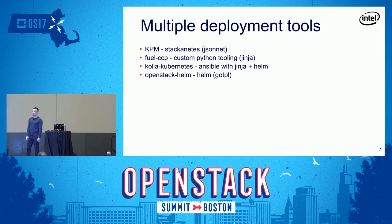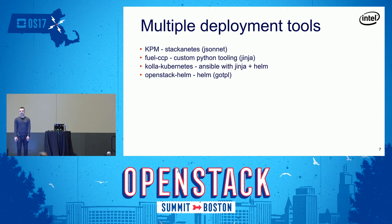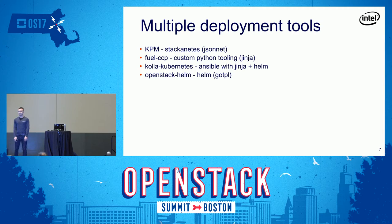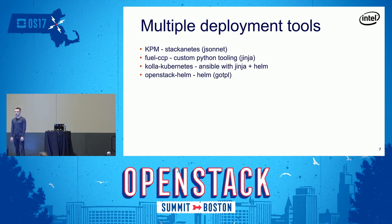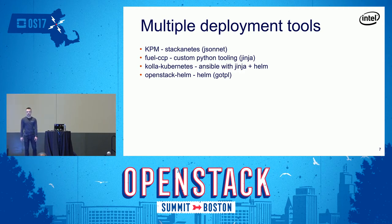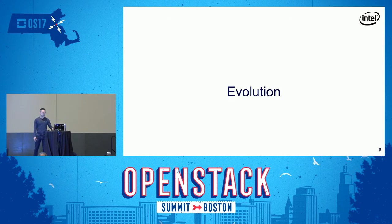Each of these solutions uses different tools to deploy containers to Kubernetes and template configuration files. Staconetis was using KPM. FuelCCP has its own custom tooling written in Python using Jinja templates. Kola Kubernetes uses a hybrid approach — Ansible with Jinja for configuration templating, then calling Helm to deploy. OpenStack Helm, recently added to the OpenStack family, is entirely Helm and uses Go templating. At the end, the goal is the same: put OpenStack on top of Kubernetes and orchestrate rolling upgrades.